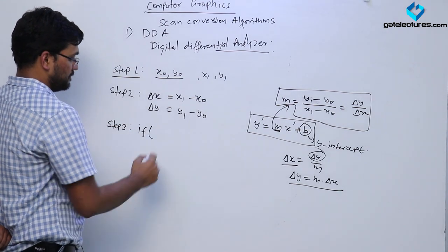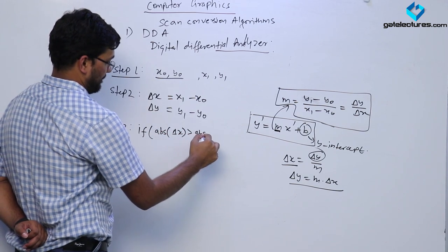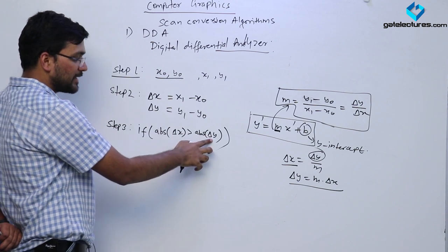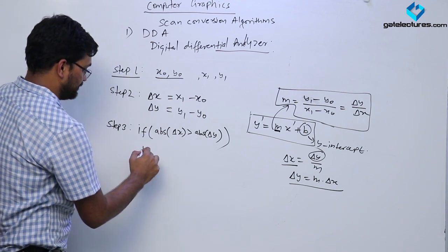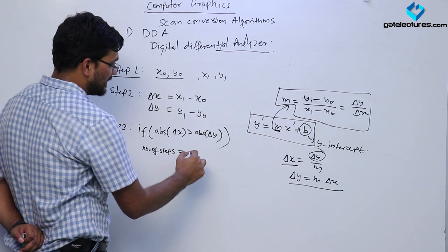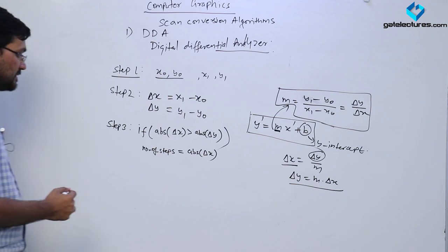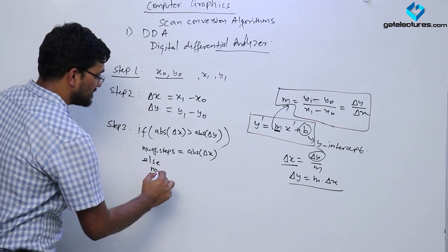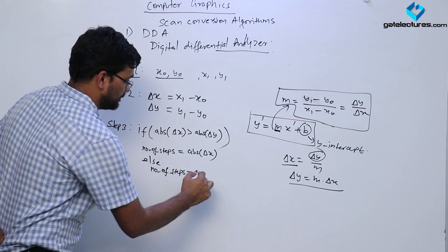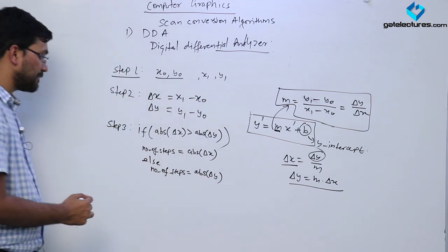Step 3: If the magnitude of delta x is greater than the magnitude of delta y, then I have a variable called 'number of steps' and I assign it as the absolute value of delta x. Else, I assign the variable 'number of steps' as the absolute value of delta y.